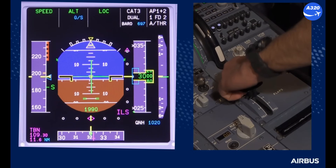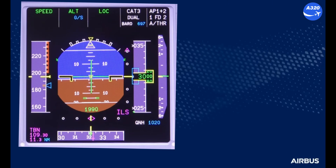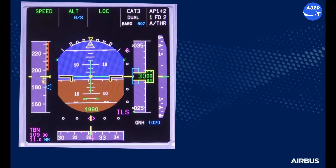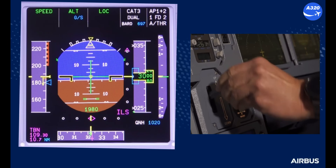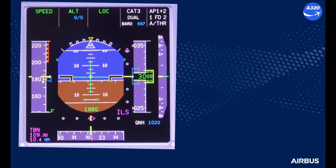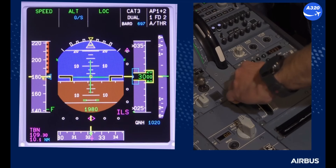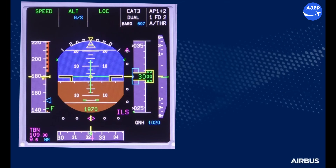When ready for approach, the crew starts configuring the aircraft towards the final landing configuration. Because the angle of attack changes during turns, this configuration change is best achieved with wings level to reduce the risk of activating the angle of attack protection. When the final landing configuration is established, the calculated VAPP from the Fly Smart landing performance module is selected.